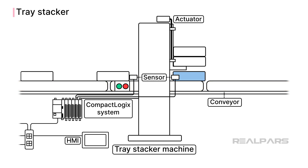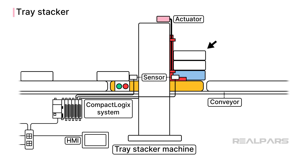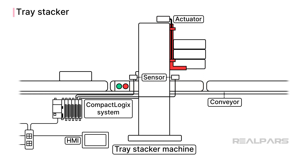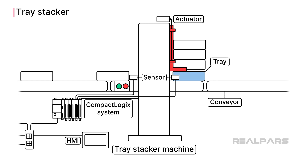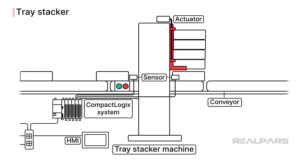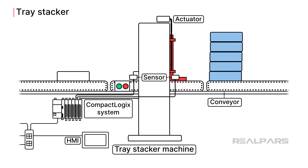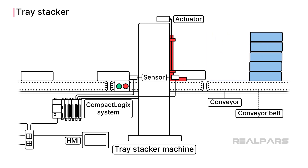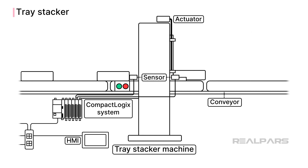When trays are stopped on the middle conveyor, an arm is lowered and a set of actuators are used to grab the tray. Once the tray is secure, the arm lifts the tray from the conveyor to make room for the next tray. The arm is lowered to place any currently stacked trays in the new tray and then grab the bottom tray. This process is repeated to build a stack of trays.